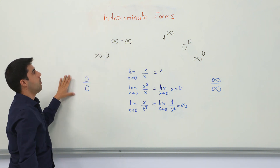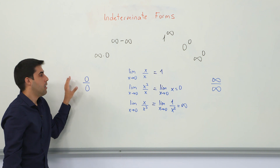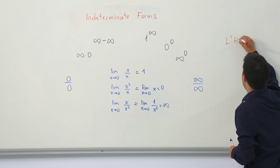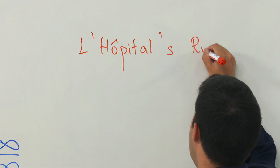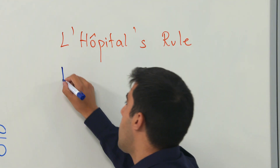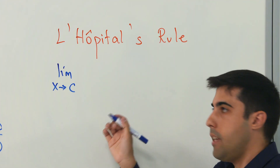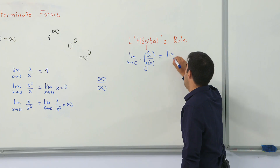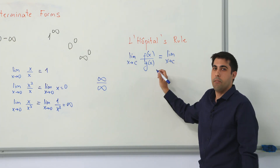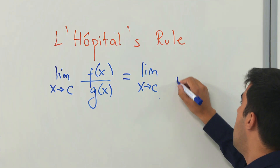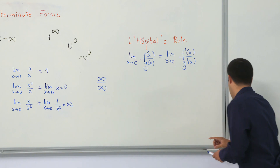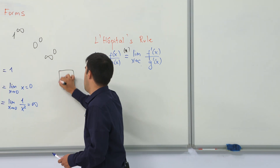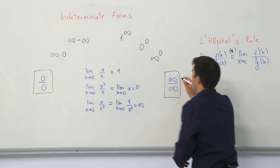That's why these forms are called indeterminate forms. To overcome this situation, we have L'Hôpital's rule. L'Hôpital's rule tells us that when calculating the limit as x goes to c of a quotient f(x) divided by g(x), where f and g are continuous functions, it equals the limit of the quotient of their derivatives — that is, the limit as x goes to c of f′(x) divided by g′(x). However, this is only valid when we have either 0 over 0 or infinity over infinity.